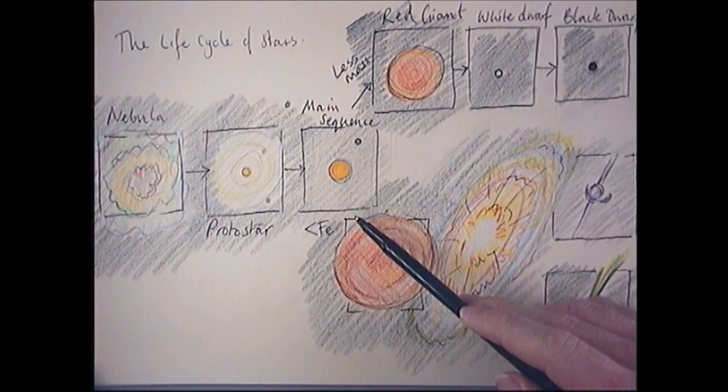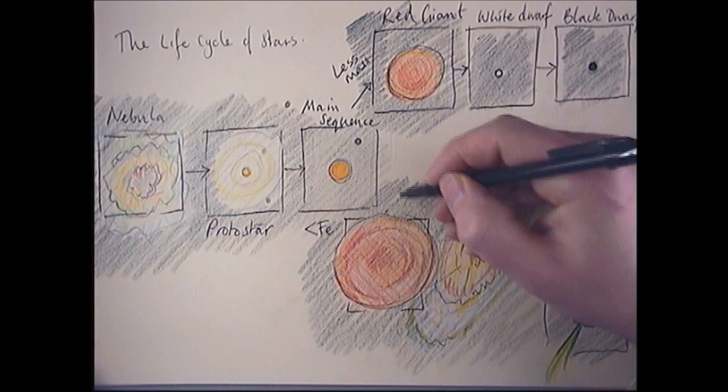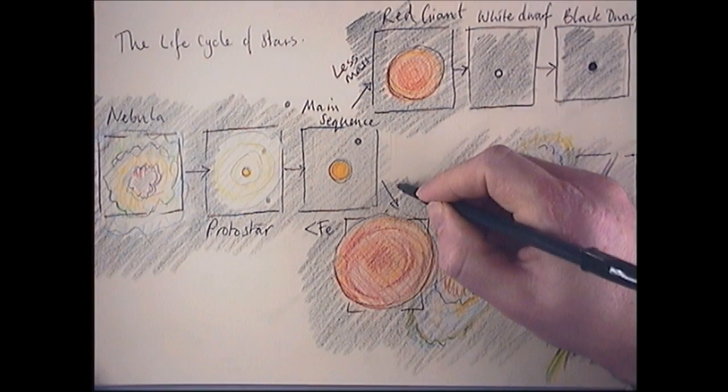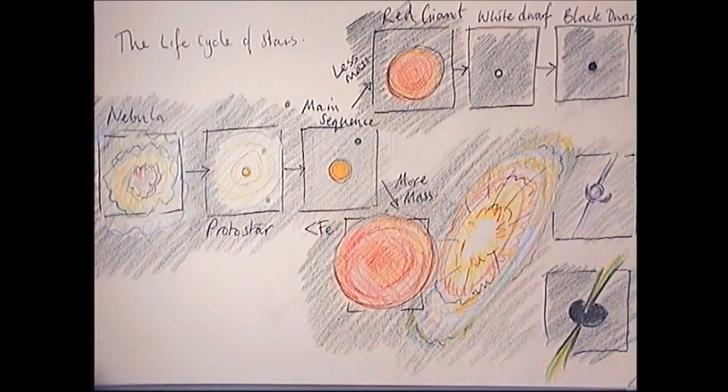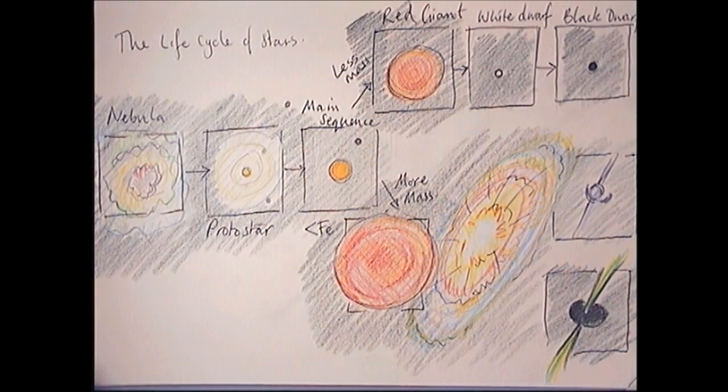Now, if we rewind and go back to here, what happens next if we have a more massive star? Well, it still turns red, is cooler and gets larger.